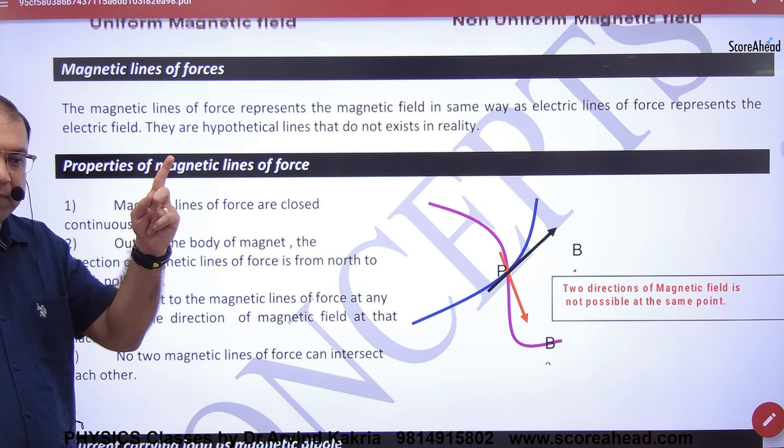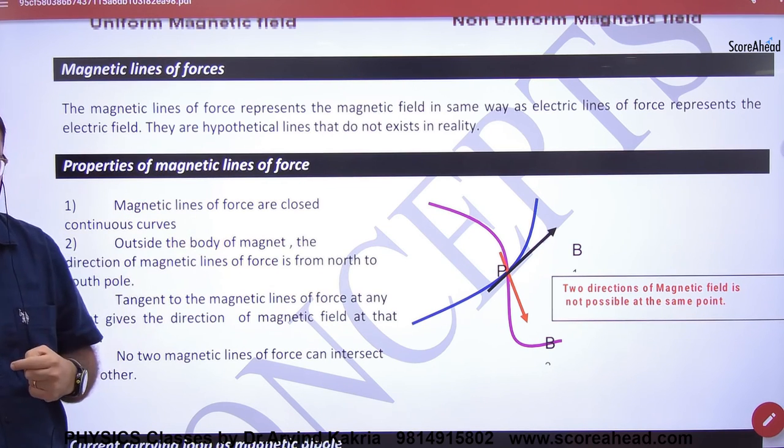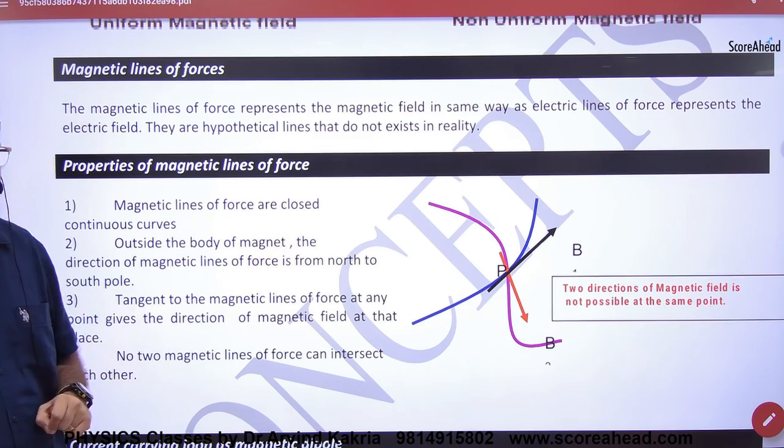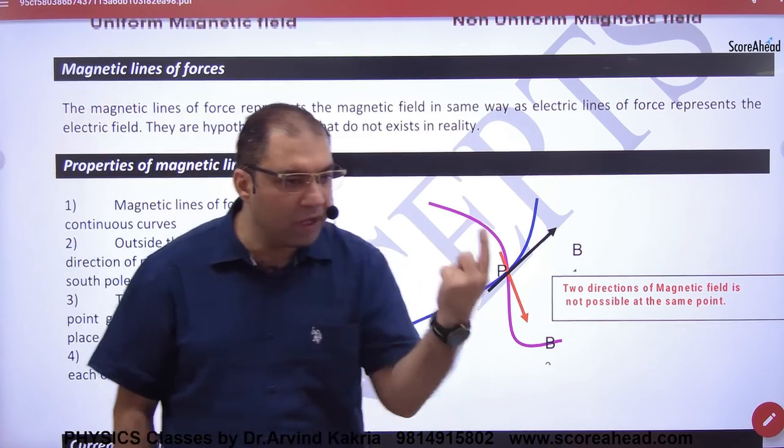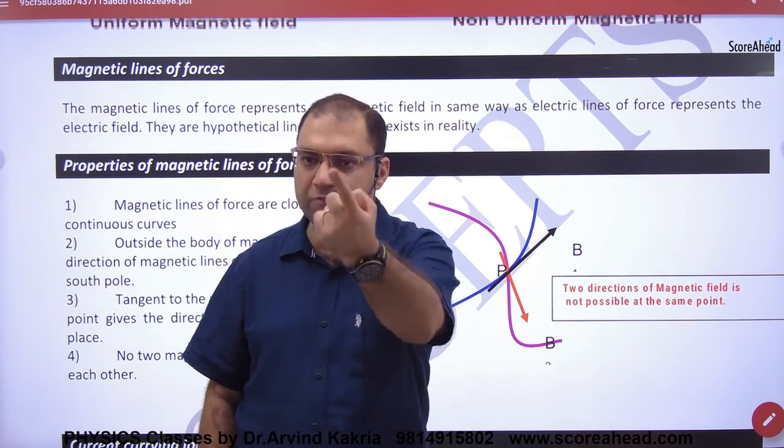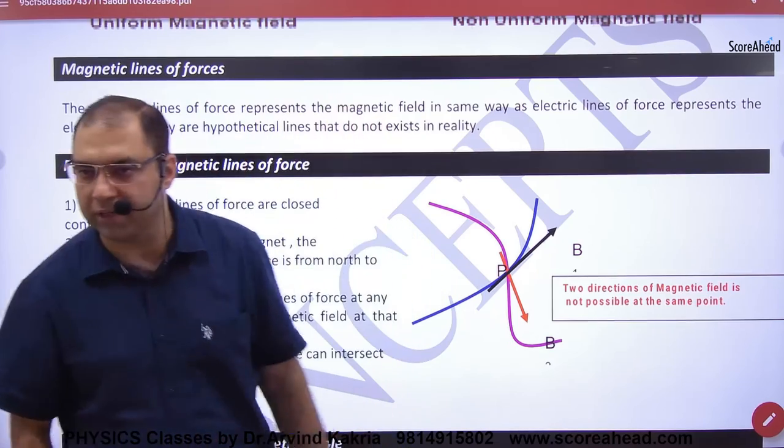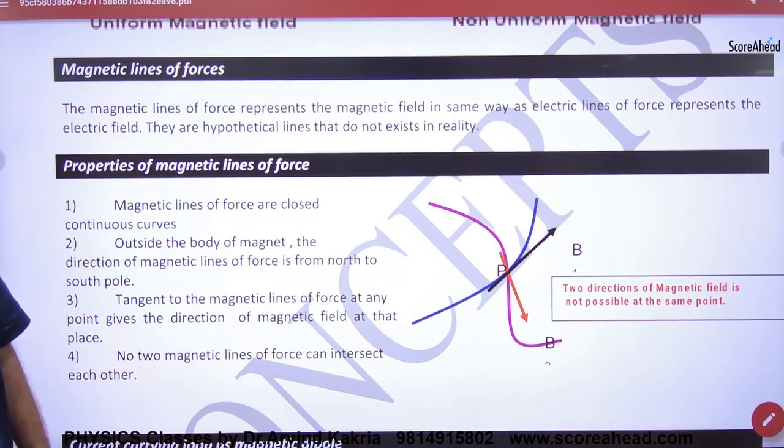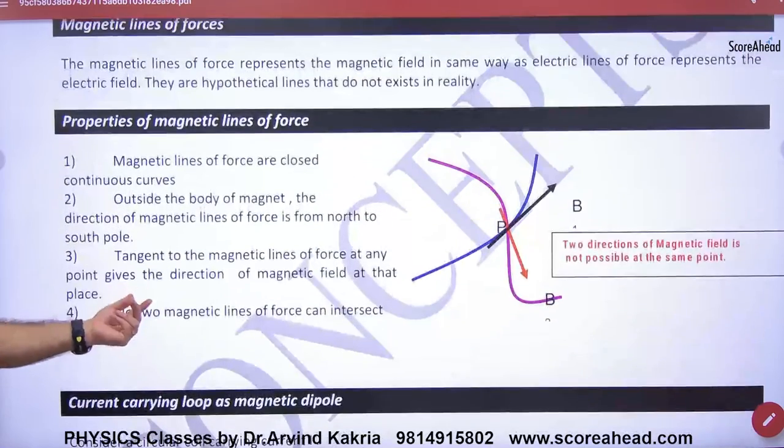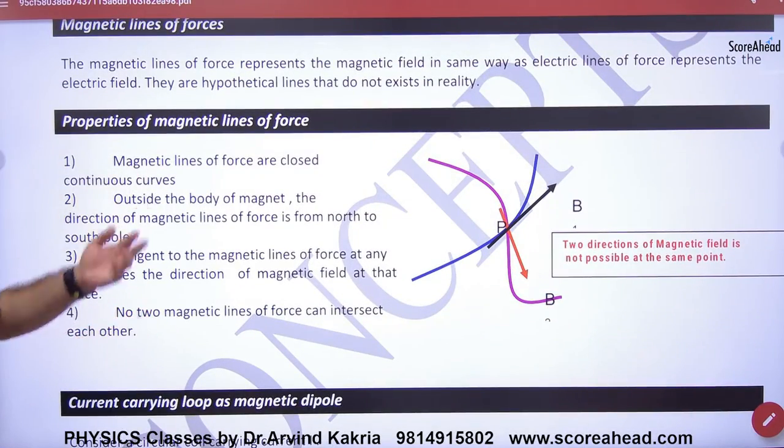Magnetic lines of force - electrostatics mein closed curve kabhi nahi banati thi, positive se start negative pe khatam. Magnetic lines of force closed loop bana sakti, jab bhi current carrying wire ki aas paas dekha concentric circles banti hai. Next hai: do lines kabhi bhi intersect nahi kar sakti, nahi toh do direction of magnetic field ho jayengi, isliye kabhi intersect nahi karengi.